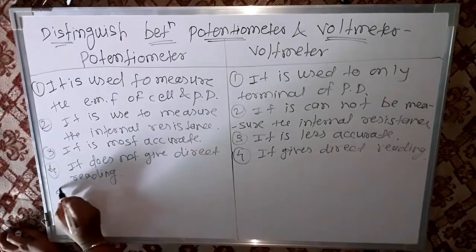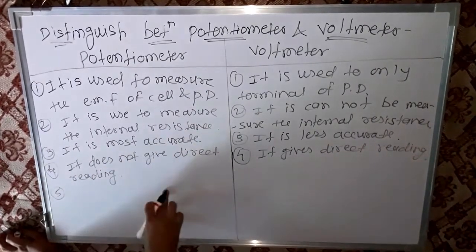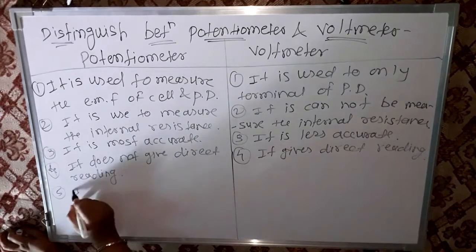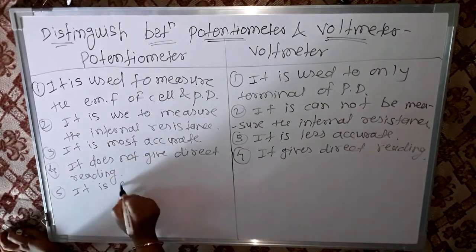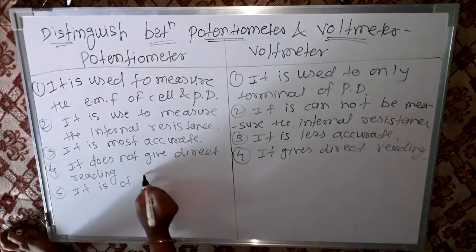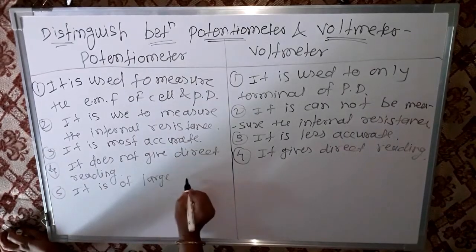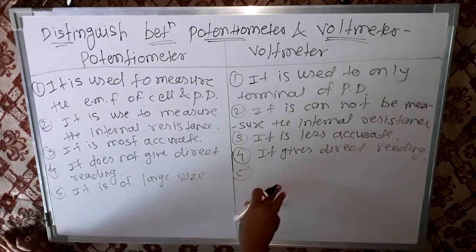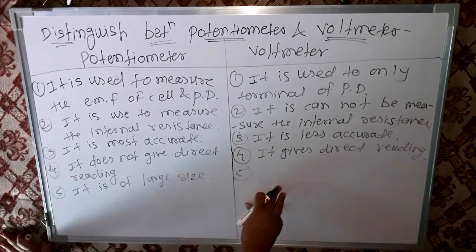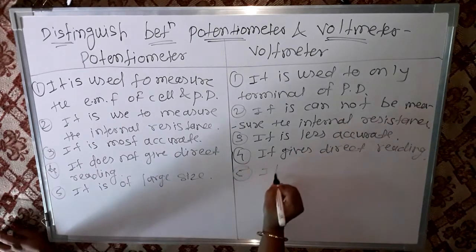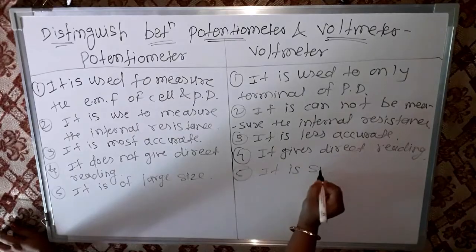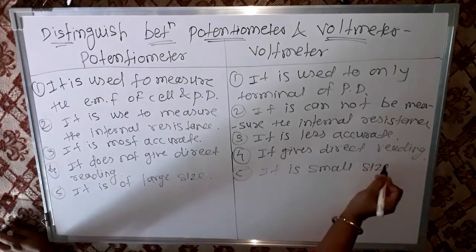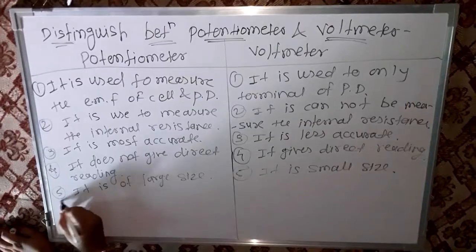Fifth point: the potentiometer is of large size. In contrast, the voltmeter is of small size.